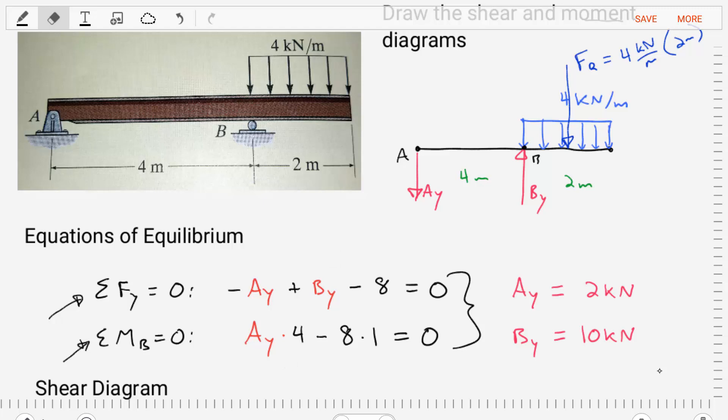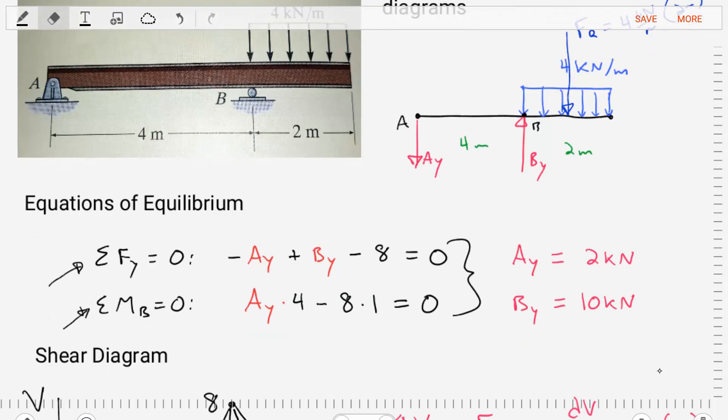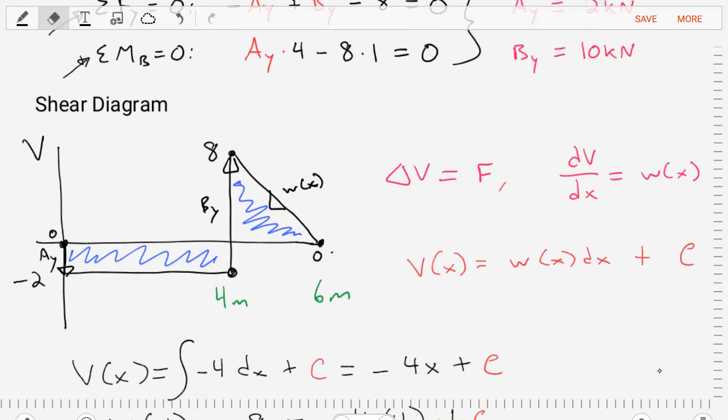Now that we know everything in our free body diagram, we can start to create the shear force and bending moment diagrams. In creating these diagrams, we want to identify what integral equations we are going to need to use. The first one describes the relationship between applied concentrated forces and a step change in the shear diagram. The second equation describes a relationship between distributed load and the slope of the shear diagram.